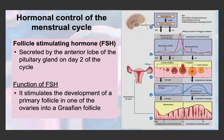Even while menstruation is still happening, a primary follicle is starting to develop again. FSH's main function is to stimulate the development of a primary follicle — in either the left or right ovary — into a Graafian follicle. The hypothalamus stimulates the anterior pituitary gland to release FSH. During the follicular phase, before ovulation, FSH increases slightly to promote the development of the primary follicle into a Graafian follicle.